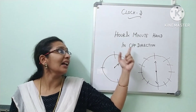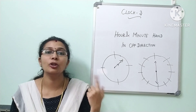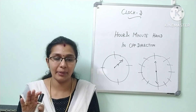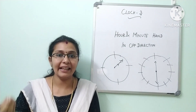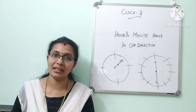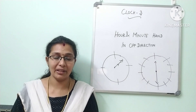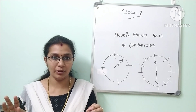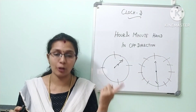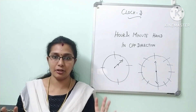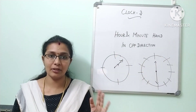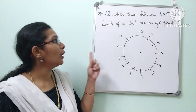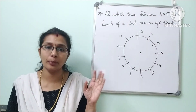Or, find the exact time at which the hour hand and minute hand are in a straight line but not together. So, looking at the opposite direction concept — that is the opposite direction, just ask the straight line. Let's see the first question: at one time between 4 and 5, the hands of a clock are in opposite direction.